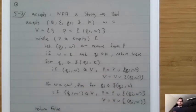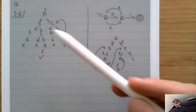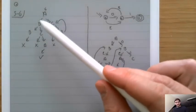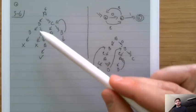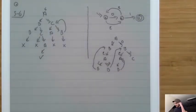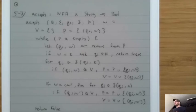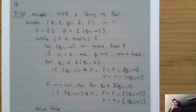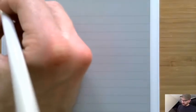This is the backtracking implementation, because it explores the tree and walks back to try a different path if it ever reaches a problem. Let's walk through a particular example of running the Accepts function on the 'third from end' machine.